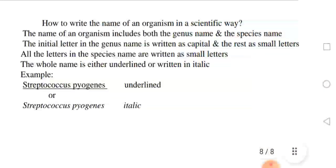To write the name of an organism in a scientific way, the name includes both the genus name and the species name. The first letter of the genus name is written as a capital, and the rest are small letters. All letters in the species name are written in small letters. The whole name is either underlined or written in italic — for example, Streptococcus pyogenes underlined, or Streptococcus pyogenes in italic.